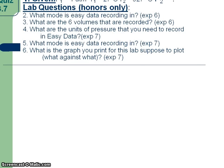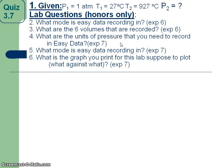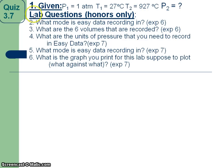So here is your question — it's a quiz in the notes. Your pressure one is one atmosphere. Your temperature one is 27°C. Your temperature two is 927°C. What is your pressure two going to be? Give me an answer and that's the end of notes for today.